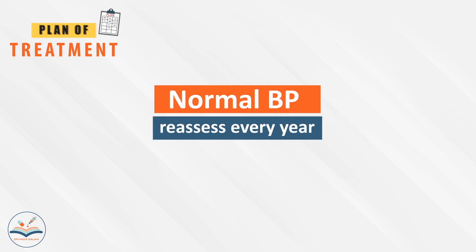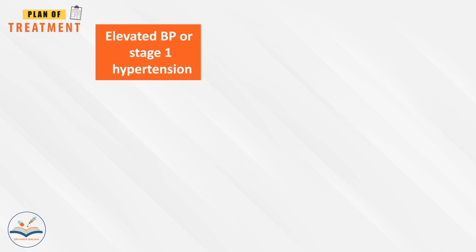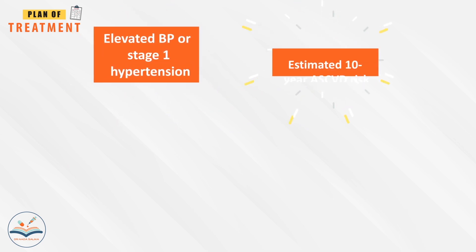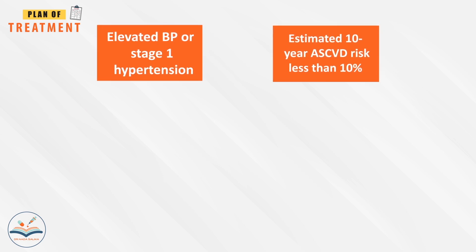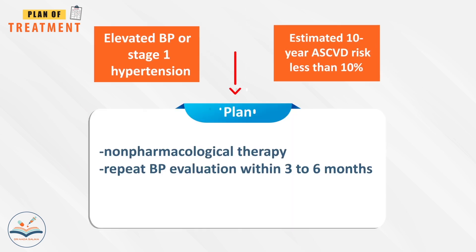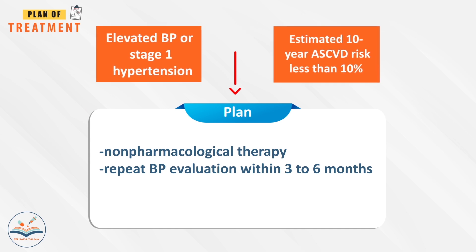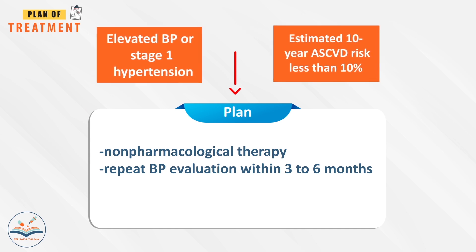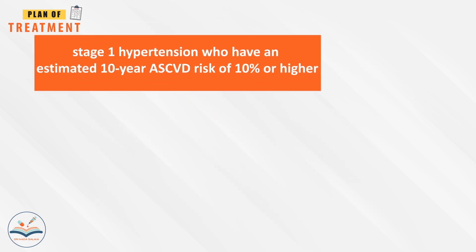For normal blood pressure, it is recommended to reassess blood pressure every year. For elevated blood pressure or stage one hypertension with an estimated 10-year atherosclerotic cardiovascular disease risk less than 10%, it is recommended to treat with non-pharmacological therapy and repeat blood pressure evaluation within three to six months.